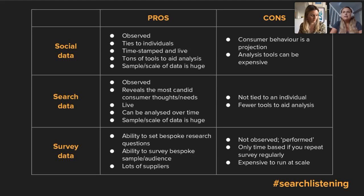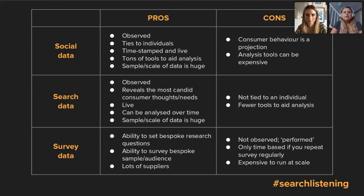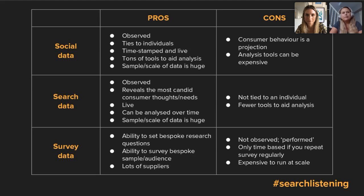Social data pros: it's observed, you can tie it to individuals, it's timestamped and live so you can compare across time periods, and there are sophisticated tools to aid analysis. The scale of data is huge. Search data is equally large in scale. Social data cons: it's typically a projection — people living their best lives — and analysis tools can be very expensive if you want detailed, intricate analysis.